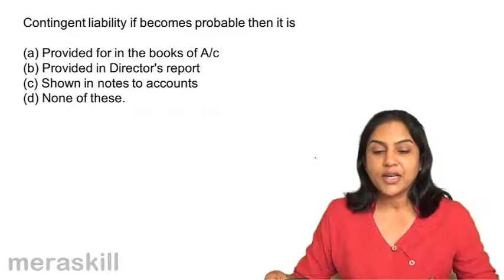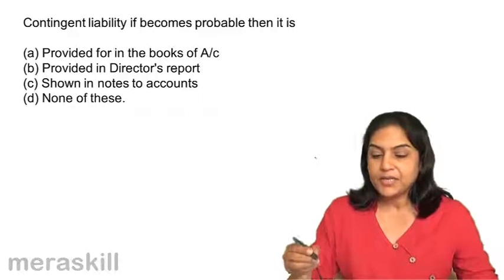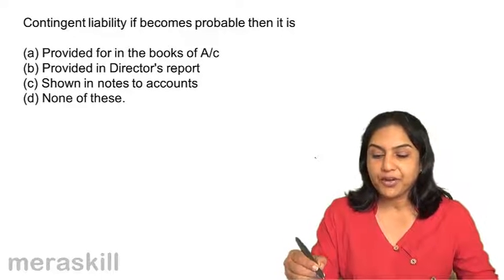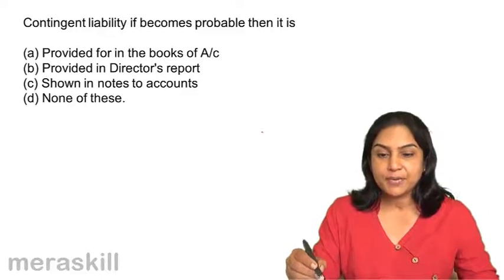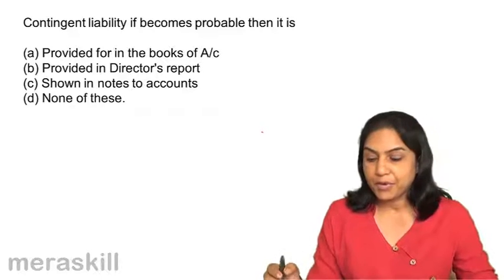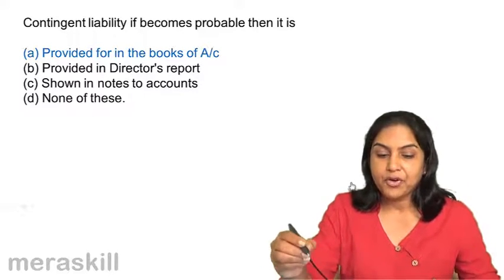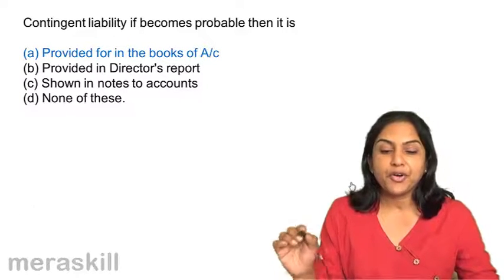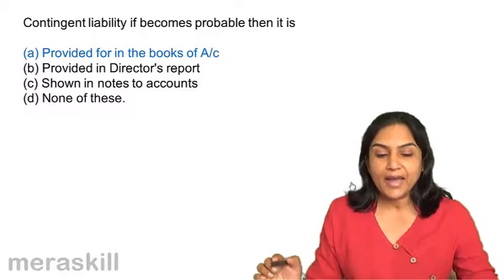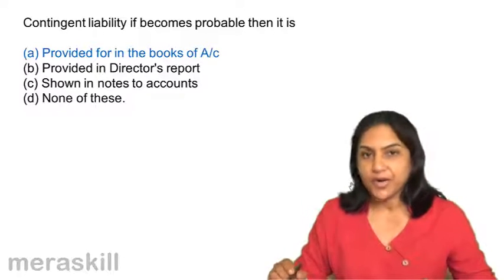Contingent liability, if it becomes probable, then we need to provide for this. Because it has become probable, it should be provided for — option A, provided for in the books of account.